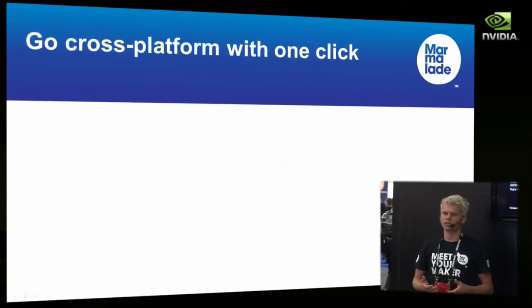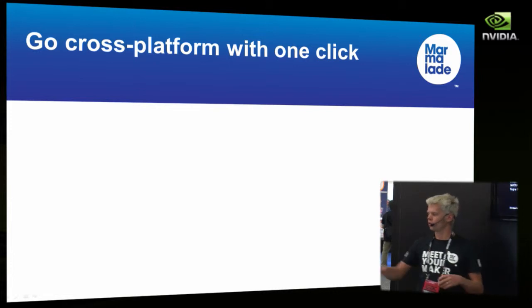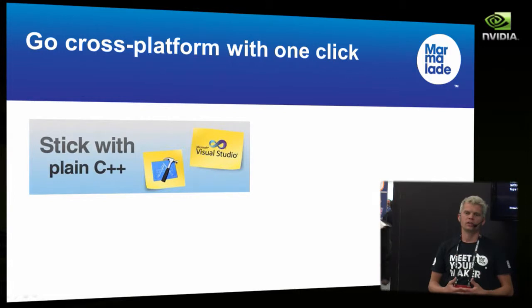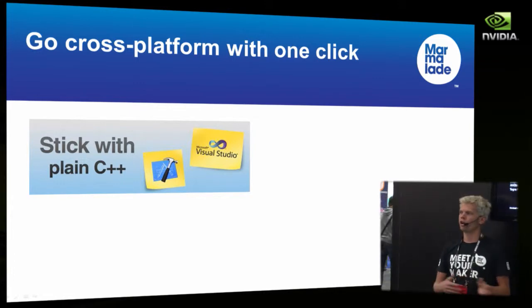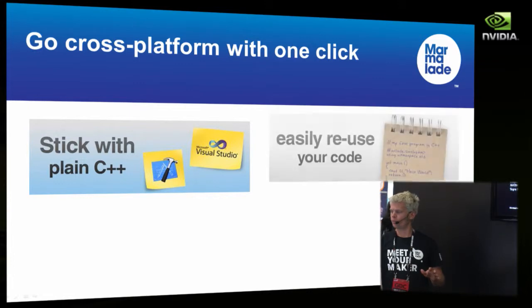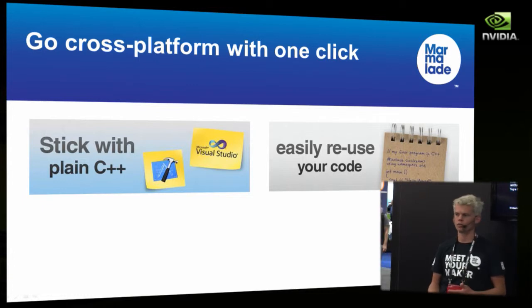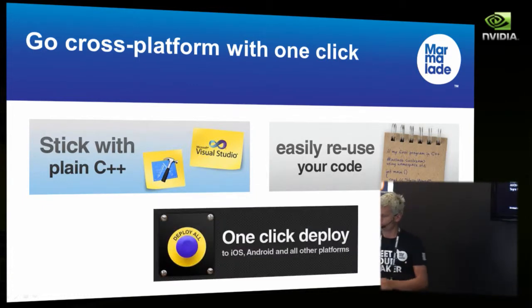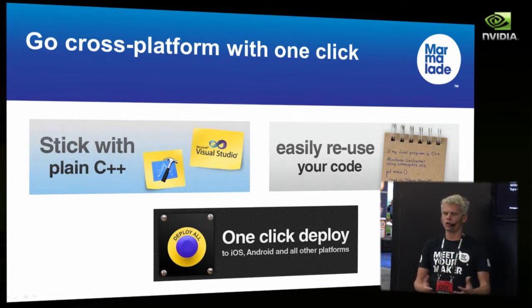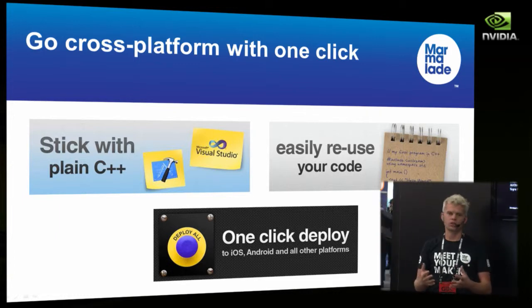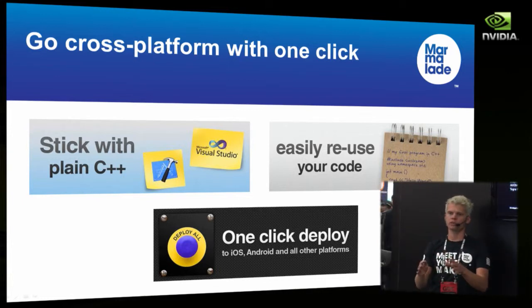The key to Marmalade is the ability to deploy your application or game with a single click to multiple platforms. Marmalade is based on standard C and C++, so you can leverage all your C++ knowledge and bring across all your existing middleware and code bases. You can reuse your code because we support standard C libraries, STL, OpenGL ES 1 and OpenGL ES 2. You build once and deploy to everything.